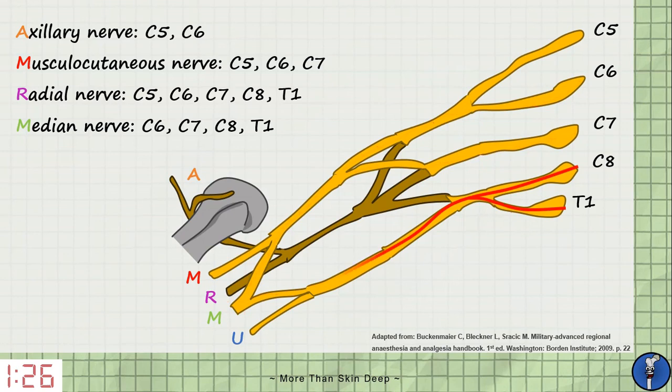And finally the ulnar nerve receives only the lowest two roots, C8 and T1.